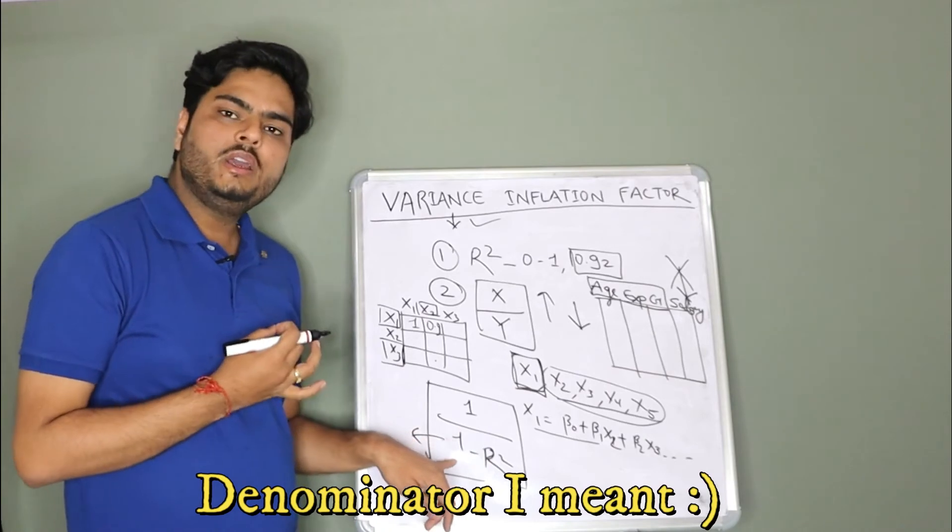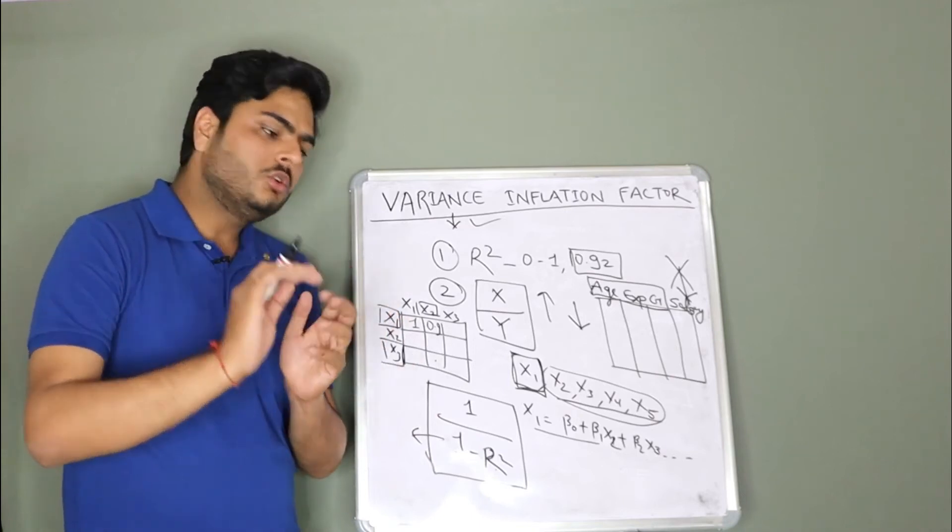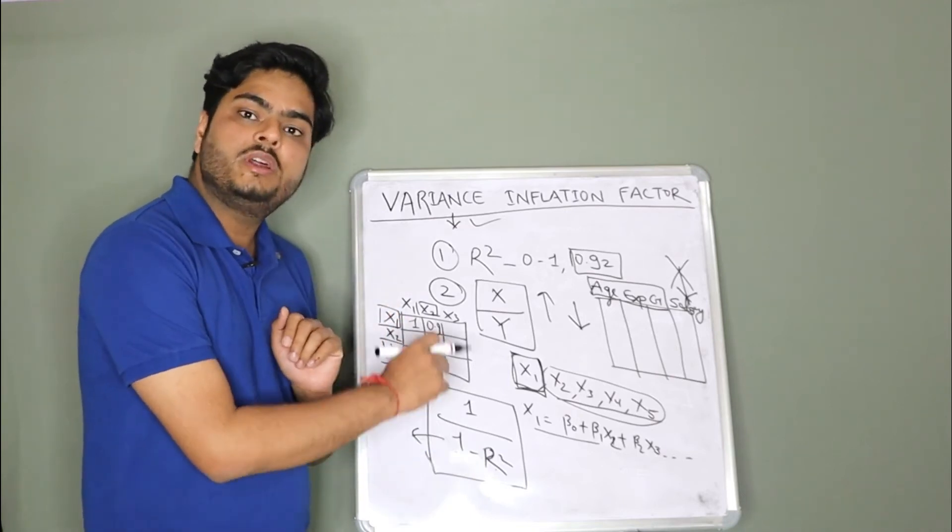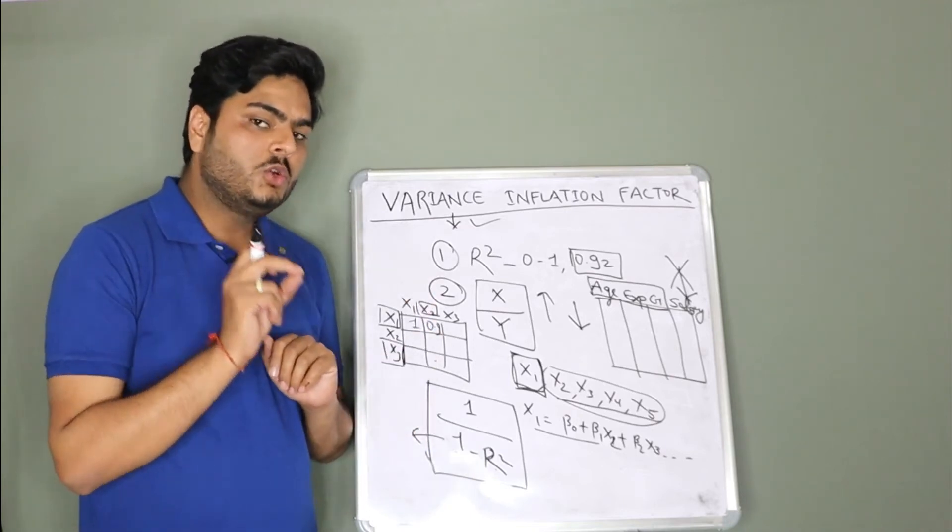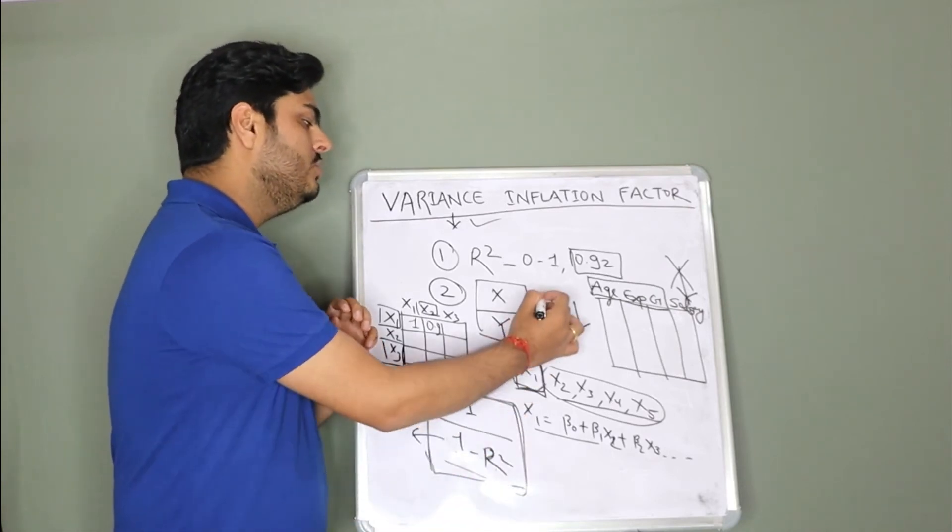If R square is high, then numerator will be high or low. If R square is high, then more magnitude goes out from one and hence denominator is low. If denominator is low, then what happens to this entire term? This term will go up.